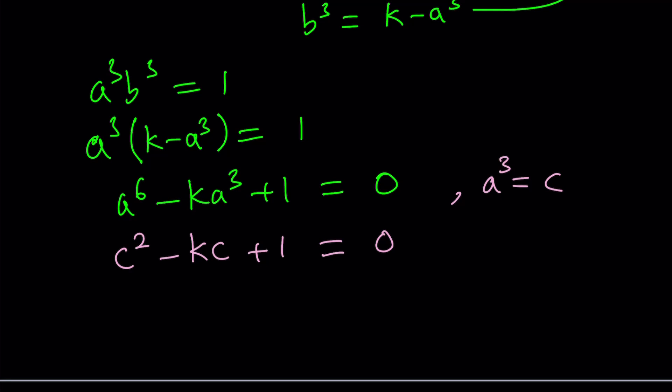Now, what do you do with this equation? Solve it using the quadratic formula. c is equal to negative b, which is k, plus minus the square root of b squared, k squared, minus 4. And that is divided by 2.